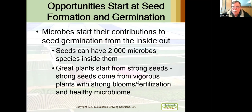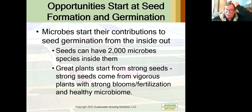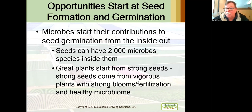Microbes do a ton of stuff for seed germination and stand establishment. Interestingly, the first relationship between microbes and seeds is that seeds actually have a lot of microbes in them. Some recent university research has indicated that as many as 2,000 different microbe species have been discovered and documented inside seeds. If you want to have a strong plant, it really needs to come from strong seeds. Strong seeds come from plants that are vigorous and have a healthy microbiome associated with them, and seed microbiology actually occurs during the pollination process.